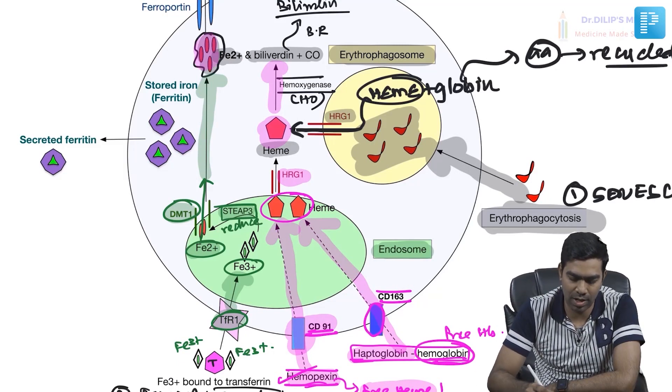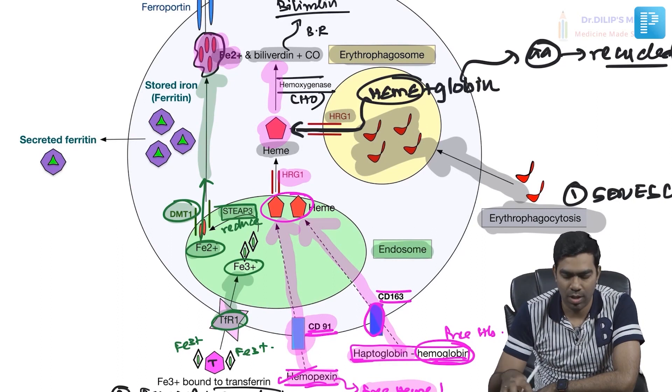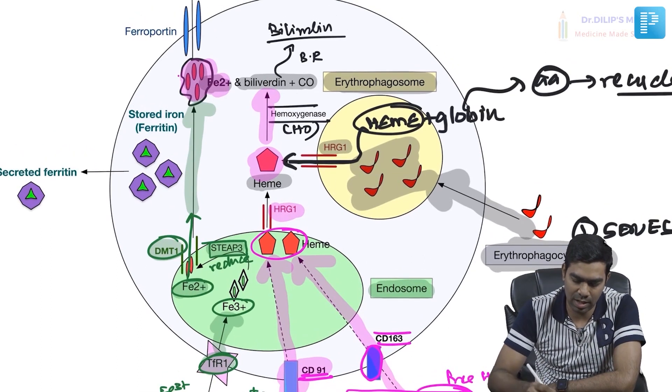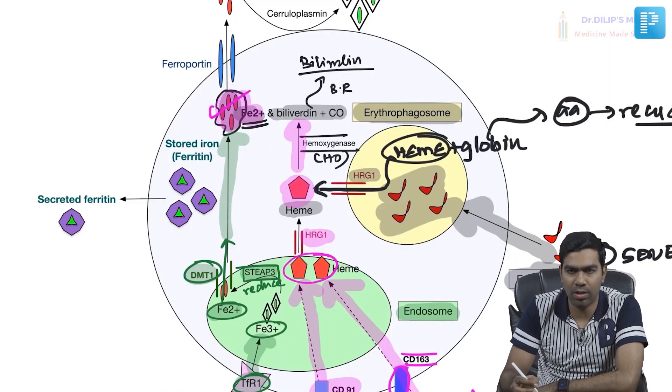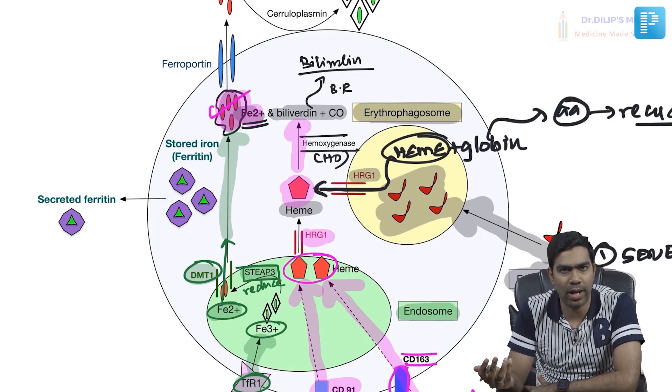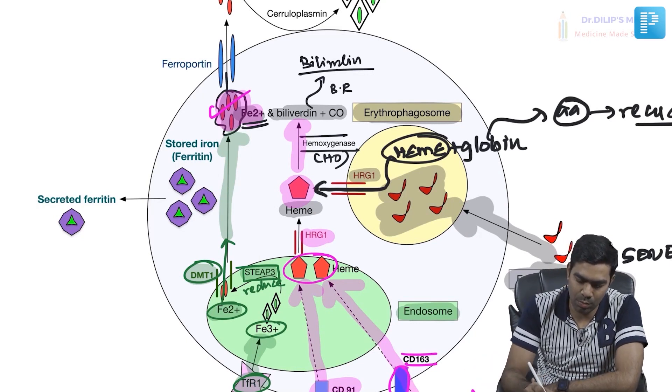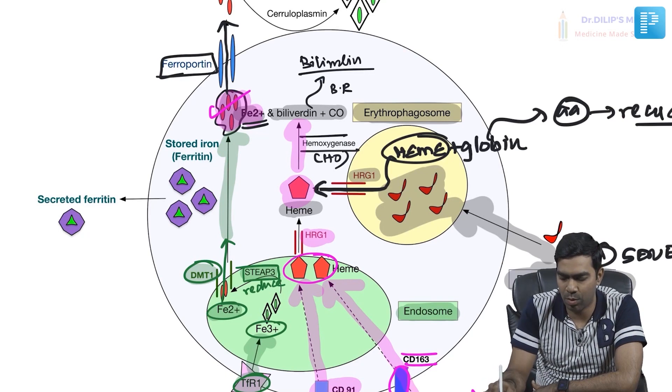So now we can see that the intracellular iron sources come from four things: erythrophagocytosis, the transport form of iron via transferrin, the haptoglobin-hemoglobin complex, and the hemopexin-heme complex. These are the four sources of Fe2+ coming into the cell. The fate of this Fe2+ depends on iron stores and hepcidin levels, and the movement of iron out of the RES is mediated by ferroportin.